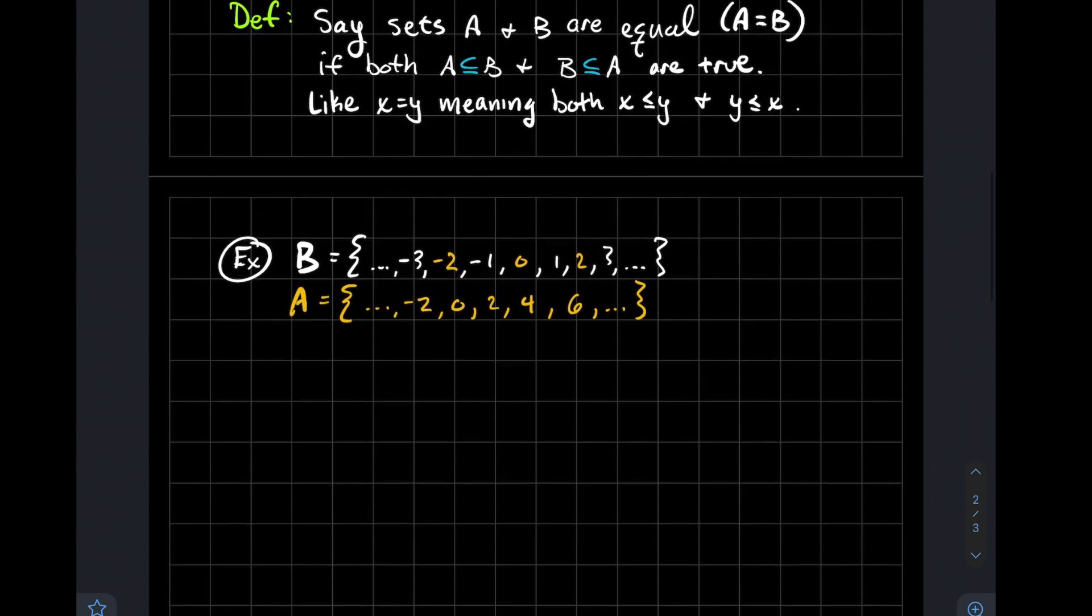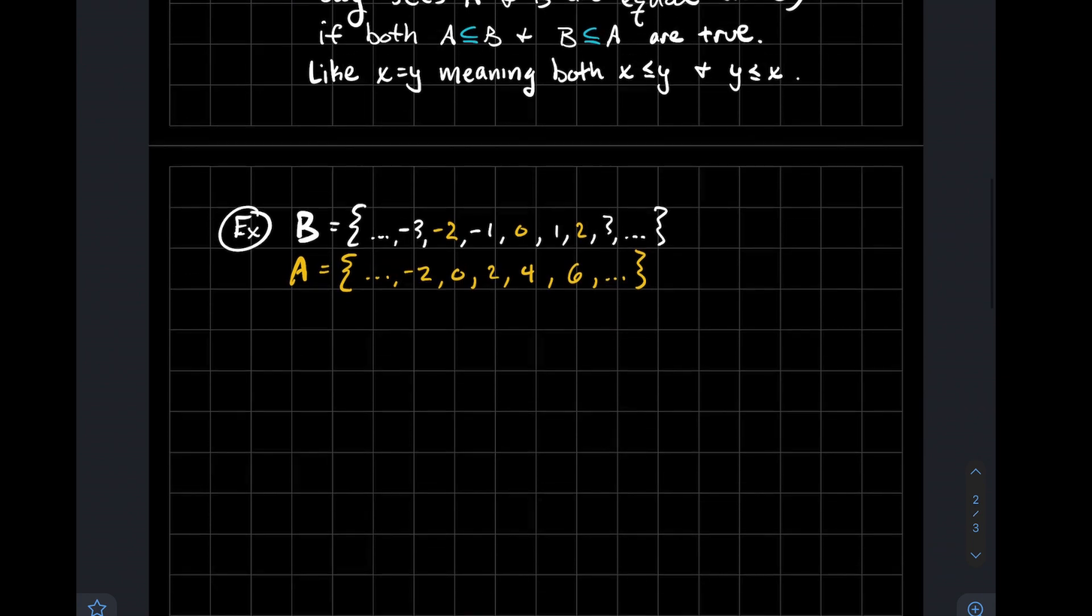All right, so for example, let's say you had two sets. Let's say B looks like just all the integers, and A looks like I'm just picking out the even integers. And I want to compare these two things. And so far, the idea of a subset is my main way to compare some sets to each other. And what do we see? I tried to color code this to make it easy to see.